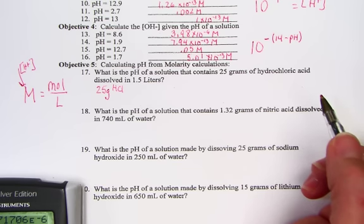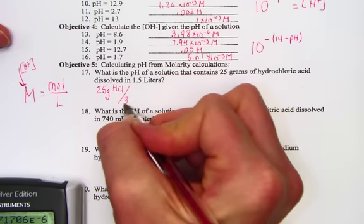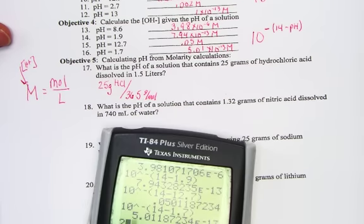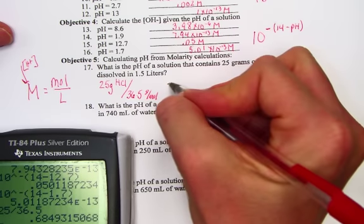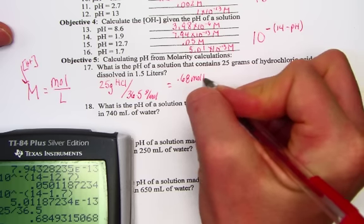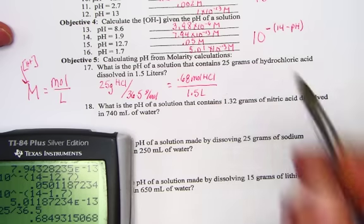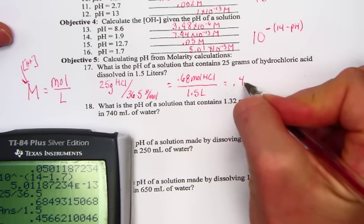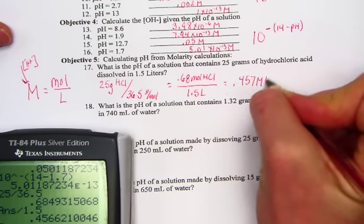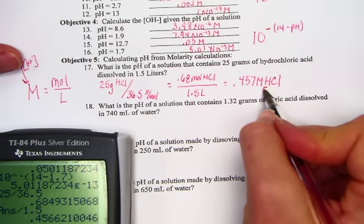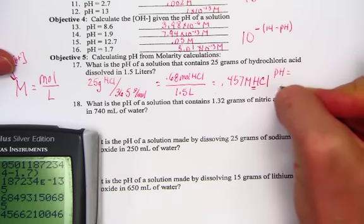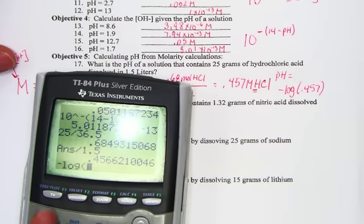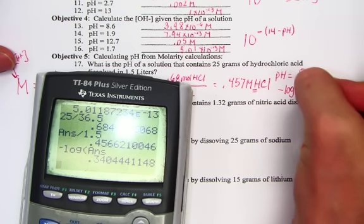25 grams of HCl. The molar mass given to us is 36.5. And what I'll do is hit 25 divided by the molar mass. And we get the number of moles to be 0.68 moles of HCl. I'll put that over the value of the volume, 1.5 liters. So big M, 0.4, I'll just round 0.457 molar concentration of HCl. This is an acid, so we can hit for pH by taking negative log of 0.457 molar. So pH, I just go negative log of the answer, and we've got 0.34 pH units.